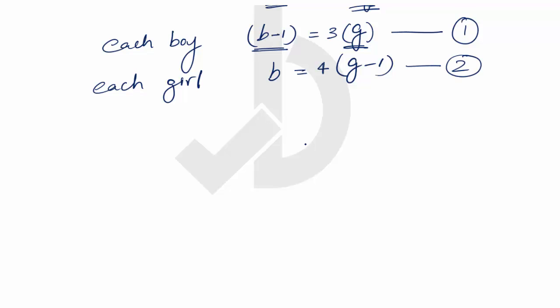Now let me solve these equations. From the first equation, B equals 3G plus 1, which I can substitute in the second equation. So 3G plus 1 equals 4G minus 4. Rearranging, B minus 1 equals 2G, and solving we get G equals 5.